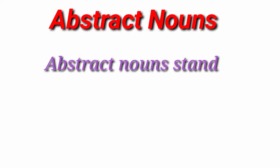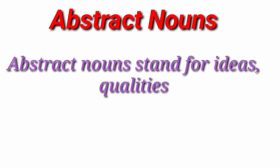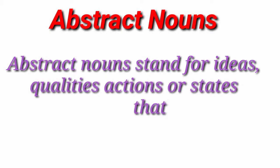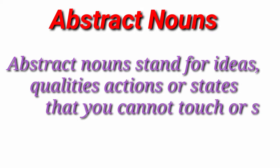There are also names of qualities or actions which can be thought of but cannot be seen or touched. Such names are called abstract nouns. Let us see today what is the abstract noun. Let's see the definition. Abstract nouns stand for ideas, qualities, actions or states that you cannot touch or see.